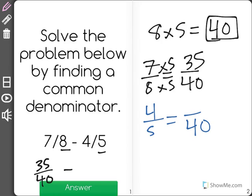And 4/5 now, to get from 5 to 40, I had to multiply by 8. I do the same on top to get 32. So 4/5 equals 32/40.